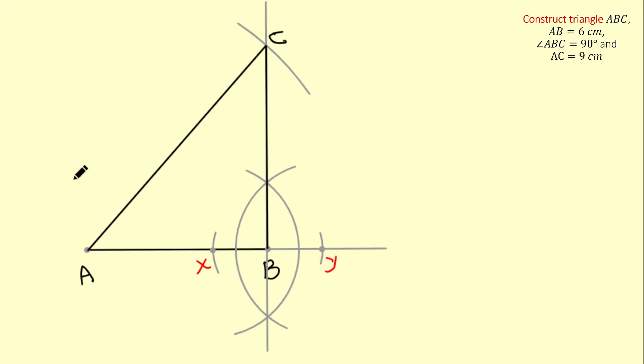Make sure you label your triangle. So this is AB. We know that AB is 6 centimeters. We know that AC is 9 centimeters.